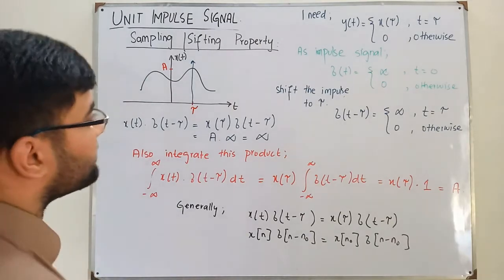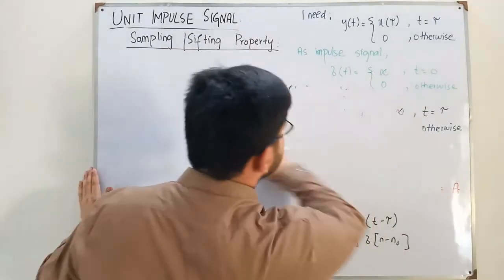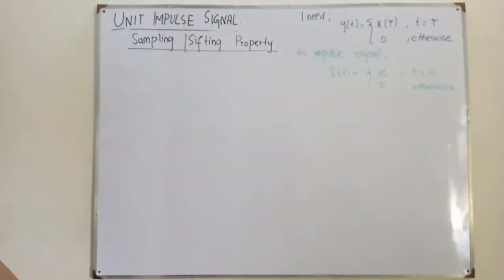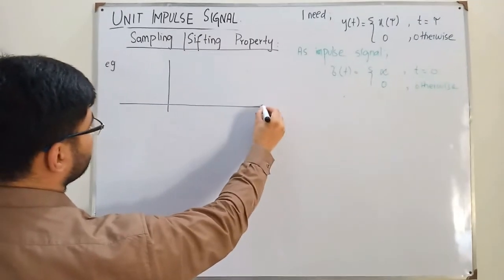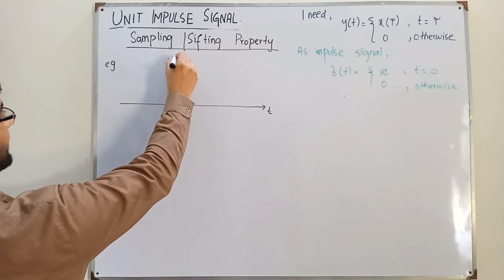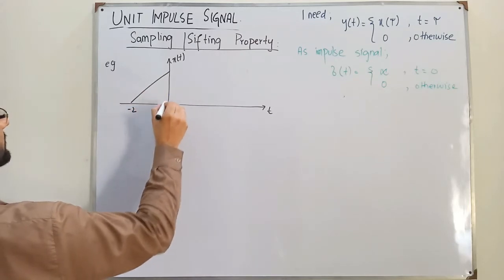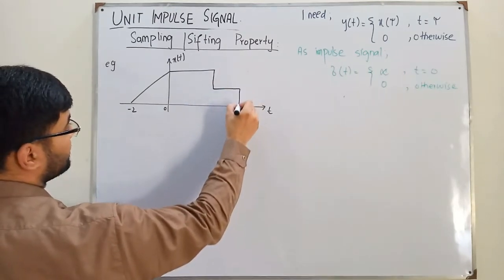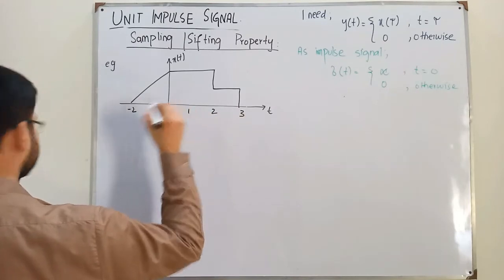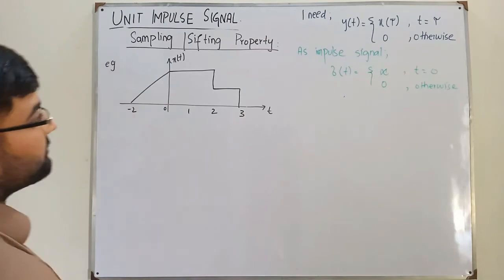Let's do an example. We have a function x of t plotted against t. It rises from negative 2, is zero at 0, then is constant until 2 and 3, with a value of 1 somewhere in between. When the value is not explicitly given, we need to find x of 1 — we need to sample the point at t equals 1.